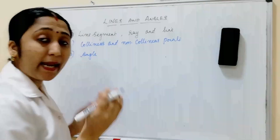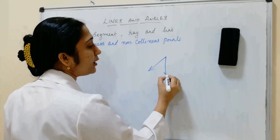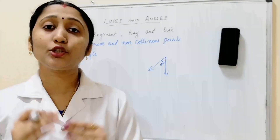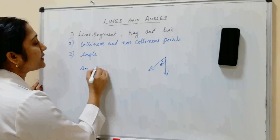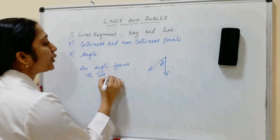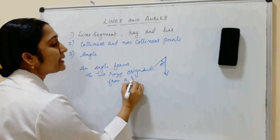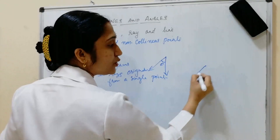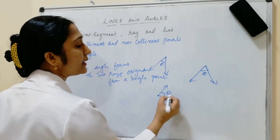Next, angle. An angle is formed when two rays originate from a single point. That single point is called the vertex. For example, if there is a point from which two rays originate, that makes an angle.